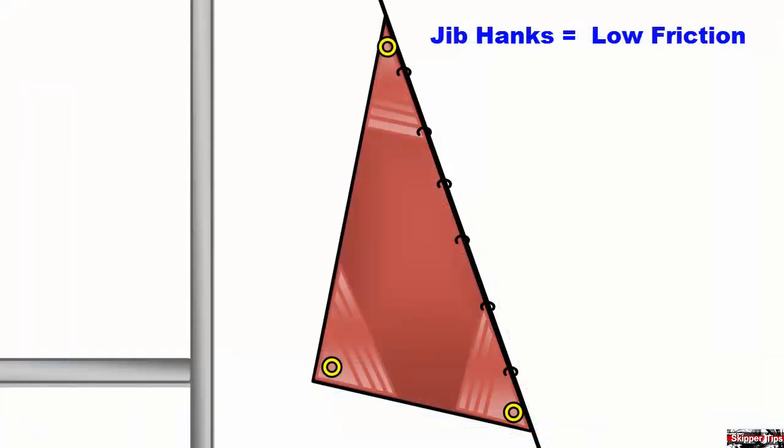In high winds these jib hanks provide low friction so that the sail will be easy to raise or lower for the short-handed crew.